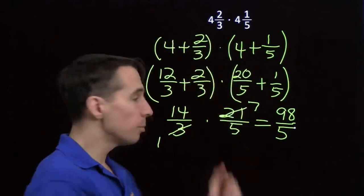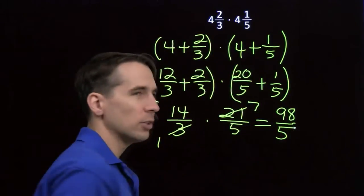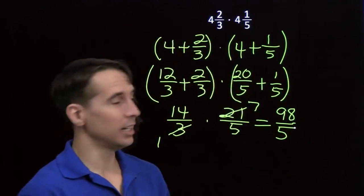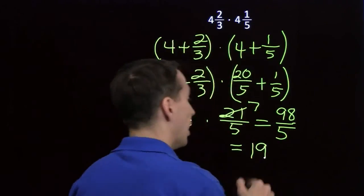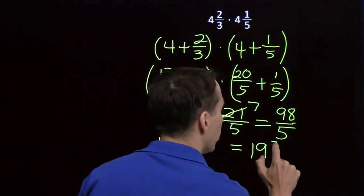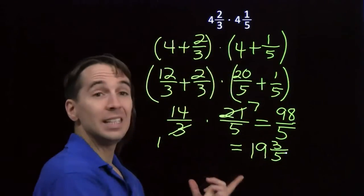Now, the problem's in mixed numbers, so we're going to write our final answer in terms of a mixed number too. 5 goes into 98. Well, 5 times 19 is 95. So this is 19. And then from 95, we go up 3 more to get to 98. So this is 19 and 3/5.